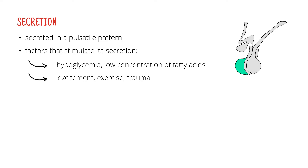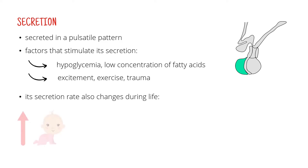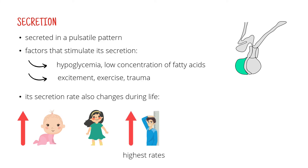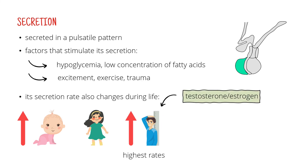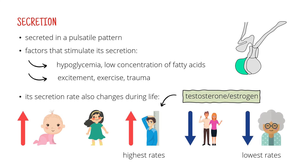What's also important is that growth hormone is secreted in different amounts during life. First it increases from the moment you're born, then its secretion remains quite stable during childhood, but then at puberty it raises enormously. This burst is induced by estrogen in females and testosterone in males and results in you growing so much. Then after puberty it starts to decline, and when you're old, the secretion rates are the lowest.